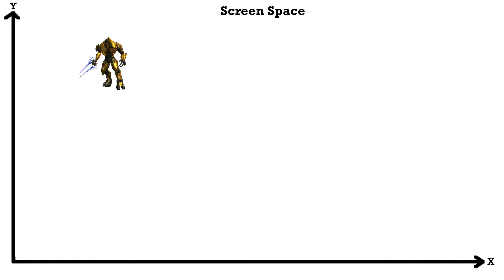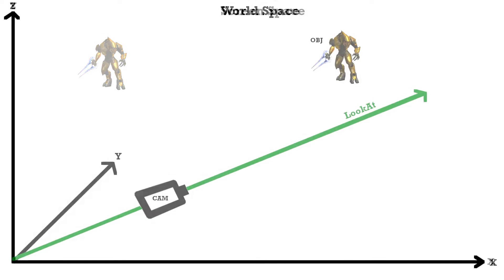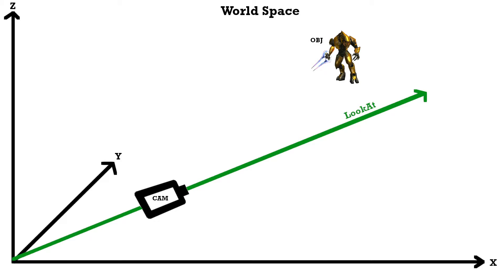The 2D plane is of course our screen. Here the origin is in the bottom left corner, with X going to the right and Y up. The so-called look-at vector is a vector in the world space which starts at the camera location and points at whatever the camera is currently looking at. Usually this vector is normalized, meaning its length is 1.